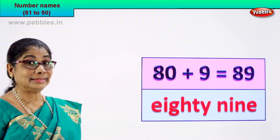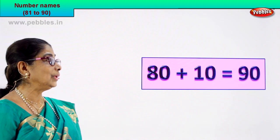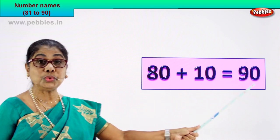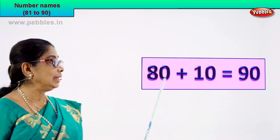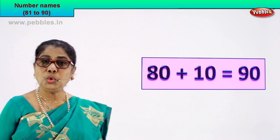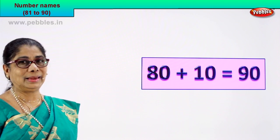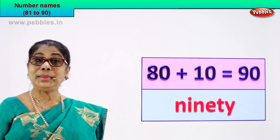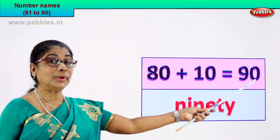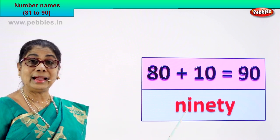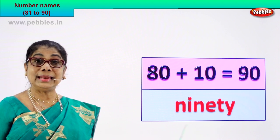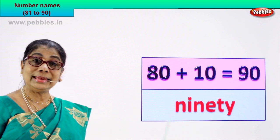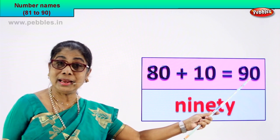Let's look at another numeral. 80 plus 10 is equal to 90. That is the numeral 90. How do we write its name? 90 is written as N-I-N-E-T-Y. Spell 90: N-I-N-E-T-Y. Ninety is the spelling of the numeral 90. Good!